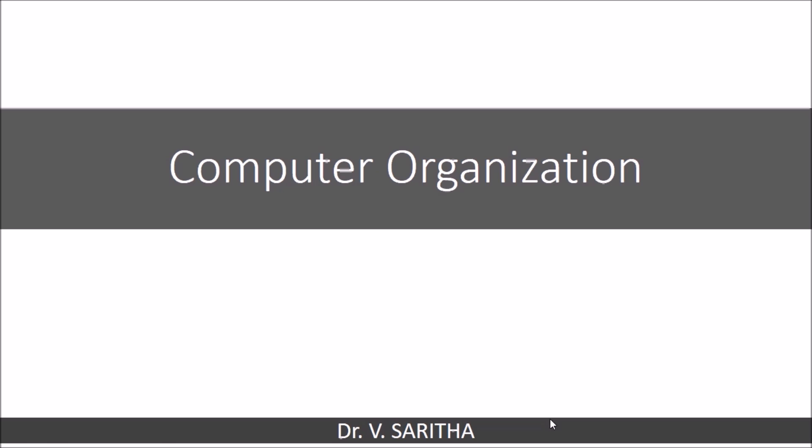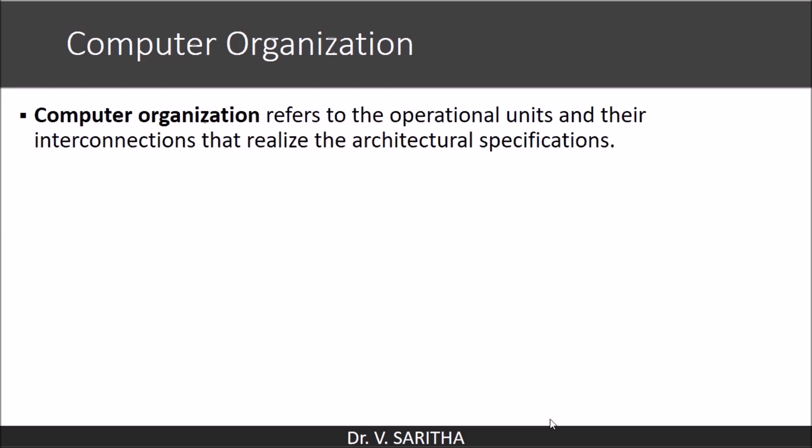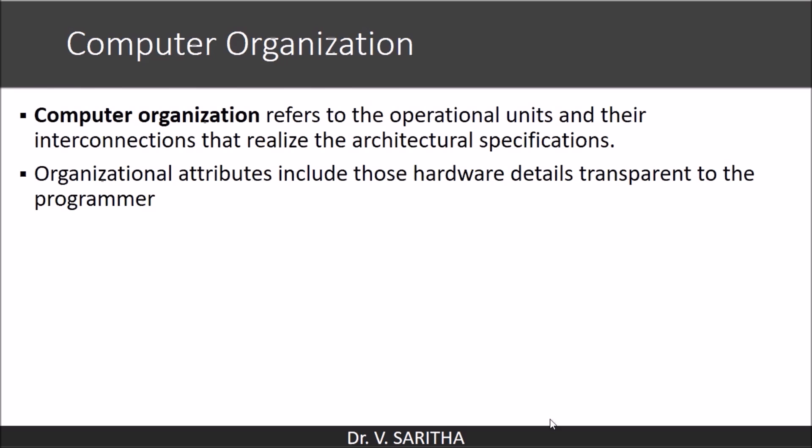Now we will see computer organization. It refers to the operational units and their interconnections that realize the architectural specifications. Organizational attributes include those hardware details that are transparent to the programmer — a programmer need not know the details related to computer organization. These are hidden to the programmer.